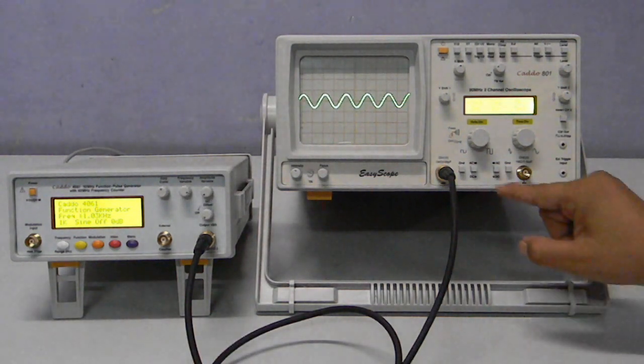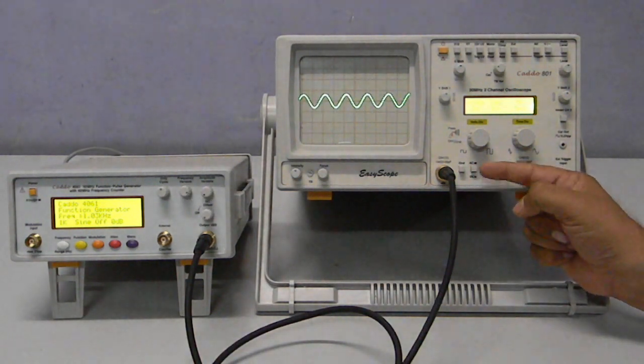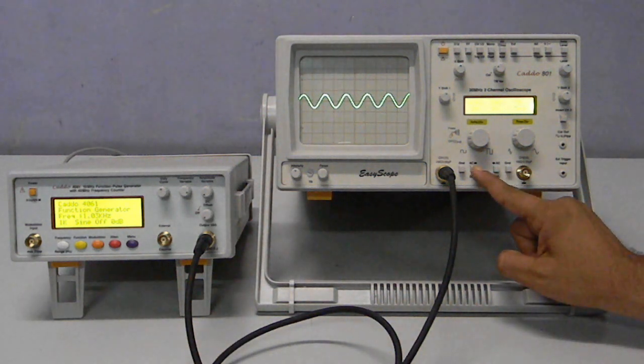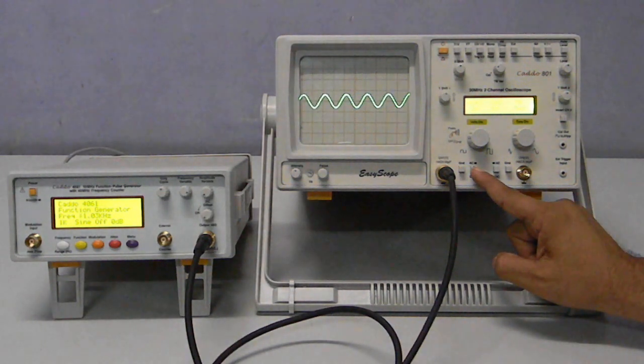And this input coupling switch is out and it is AC coupled. The moment I press this switch, the oscilloscope will enter into the direct coupled input mode.